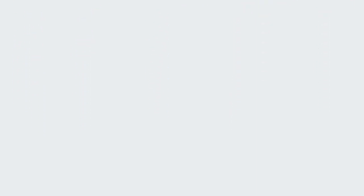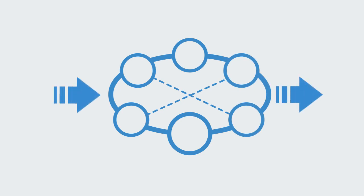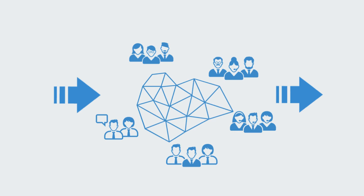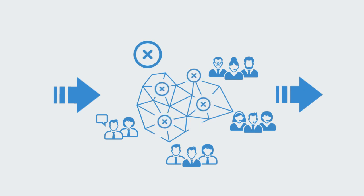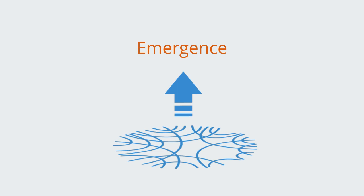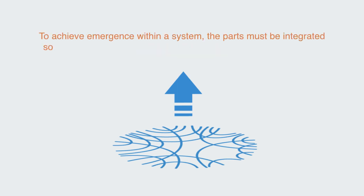The connections within a system and its overall integration enable system-wide processes to take place. Through the connections, the parts of a system can become interrelated in performing some common function. For example, the human digestive system is a set of components integrated through a nexus of connections to perform the macro operation of processing inputted food into nutrients. When a business operates as an integrated system, production processes can span the entire organization. Integration through connectivity forms the foundation of the process of emergence.